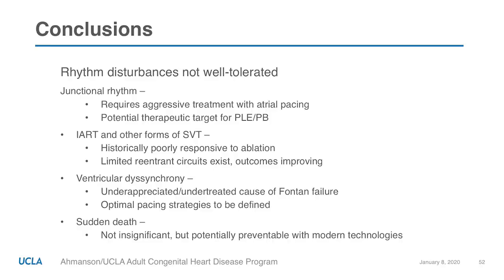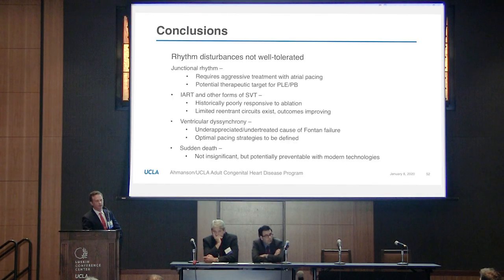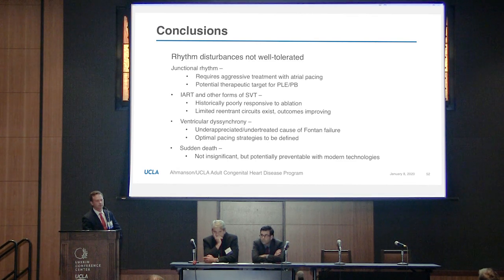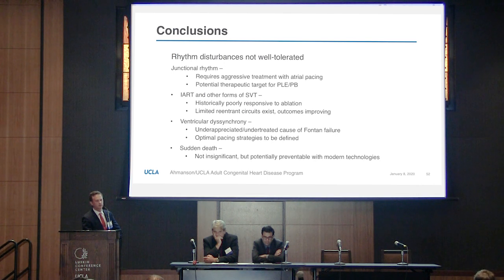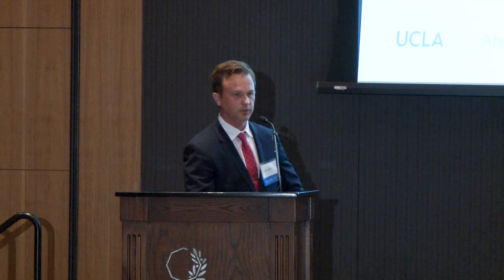To conclude: rhythm disturbances in the Fontan population are not well-tolerated and need to be aggressively targeted. Junctional rhythm is not well-tolerated and can be a potential therapeutic target for PLE. Flutter leads rapidly to tachycardia-induced cardiomyopathy, especially in the Fontan population. Catheter ablation mapping and ablation techniques are improving. Ventricular dyssynchrony is also a major cause of Fontan failure, and while we don't know the best way to resynchronize these patients, biventricular pacing currently has the most data to support it. Finally, sudden death is not an insignificant problem — we need better primary prevention predictors, but we do have a good way to treat it with the S-ICD. Thank you for your attention.